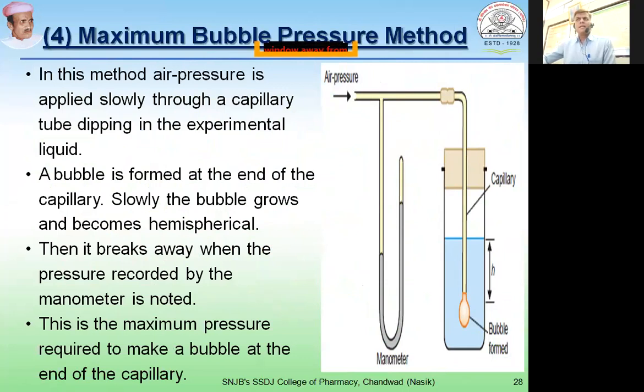What is being done in this particular method is air pressure is being applied slowly through a capillary tube which is being dipped in the experimental liquid. As you can see from the picture, one capillary tube is there which is being dipped or immersed into the liquid which is under investigation and air pressure is being applied.